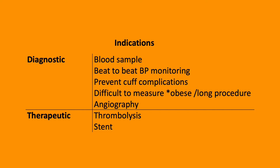Indications for arterial line insertion can be diagnostic or therapeutic. Therapeutic could be thrombolysis or stent. Diagnostic could be blood sampling, e.g. in ICU; beat-to-beat blood pressure monitoring; prevention of cuff complications in long theatre cases where the patient is at risk of nerve injury or skin damage; difficult-to-measure arterial pressures, e.g. in obese patients or lung procedures; and finally, angiography.